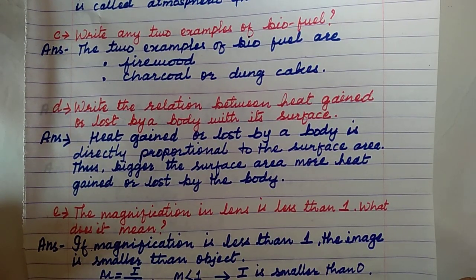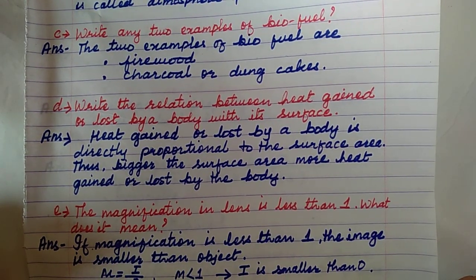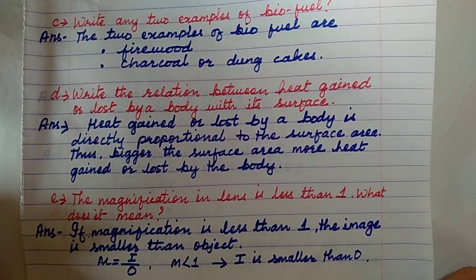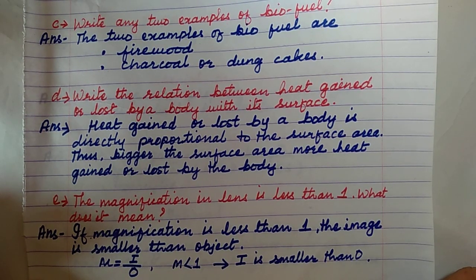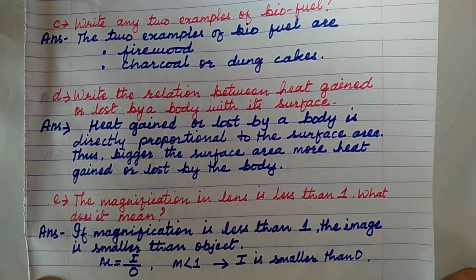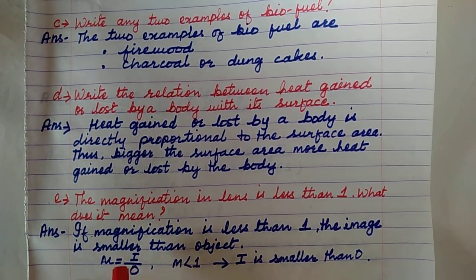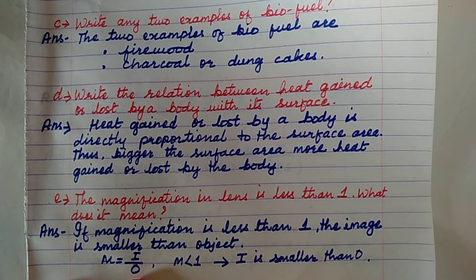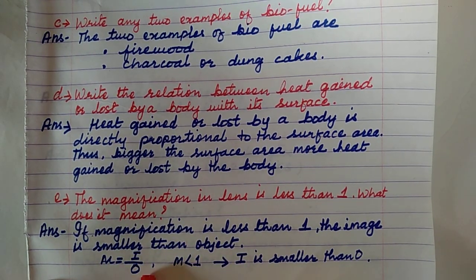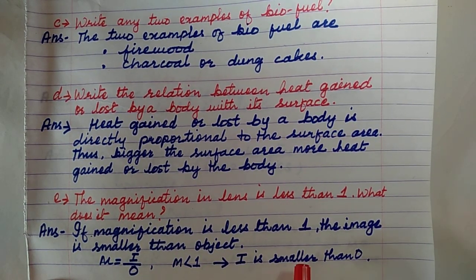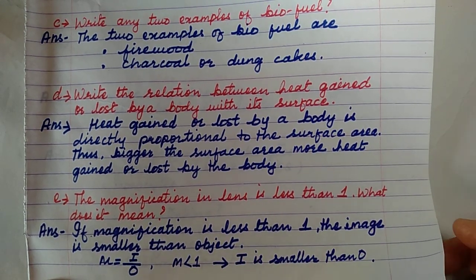Question number 1E: The magnification of a lens is less than one — what does it mean? Magnification less than one means the image is smaller than the object. From the formula magnification = height of the image divided by height of the object, if magnification is less than one, then the image height is smaller than the object height.